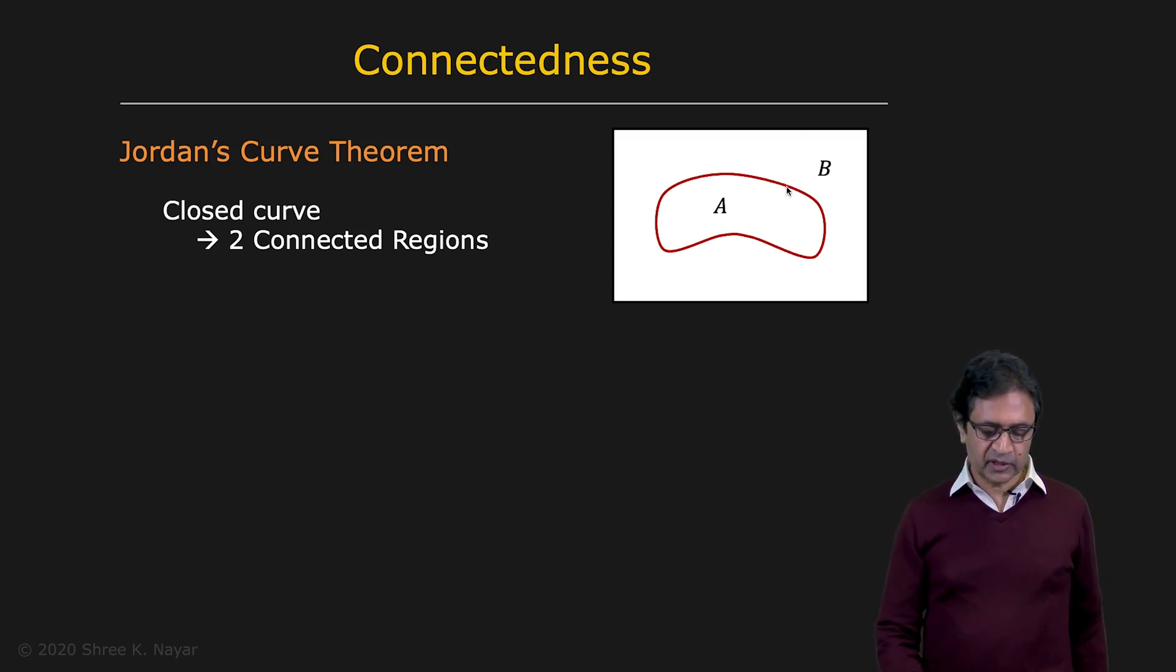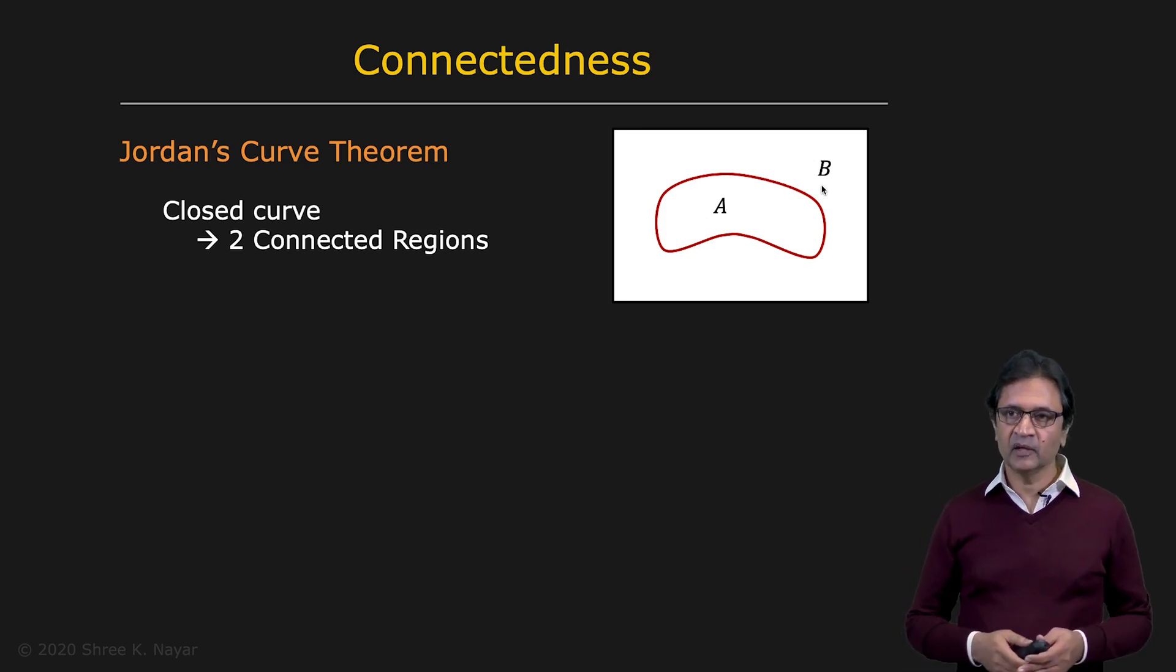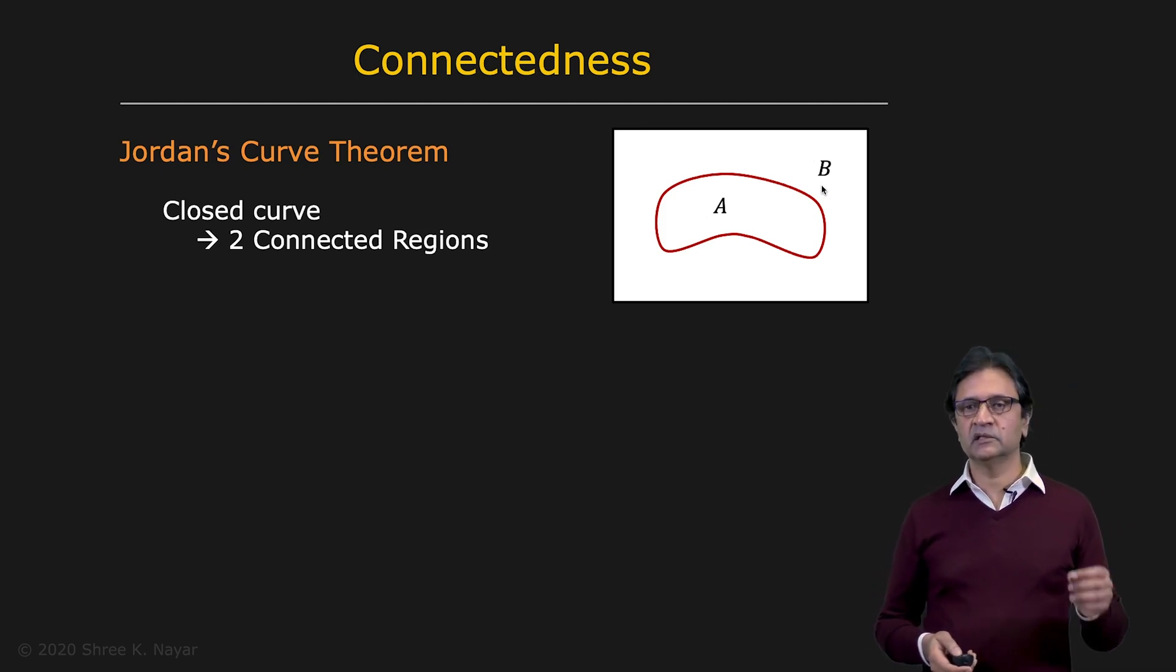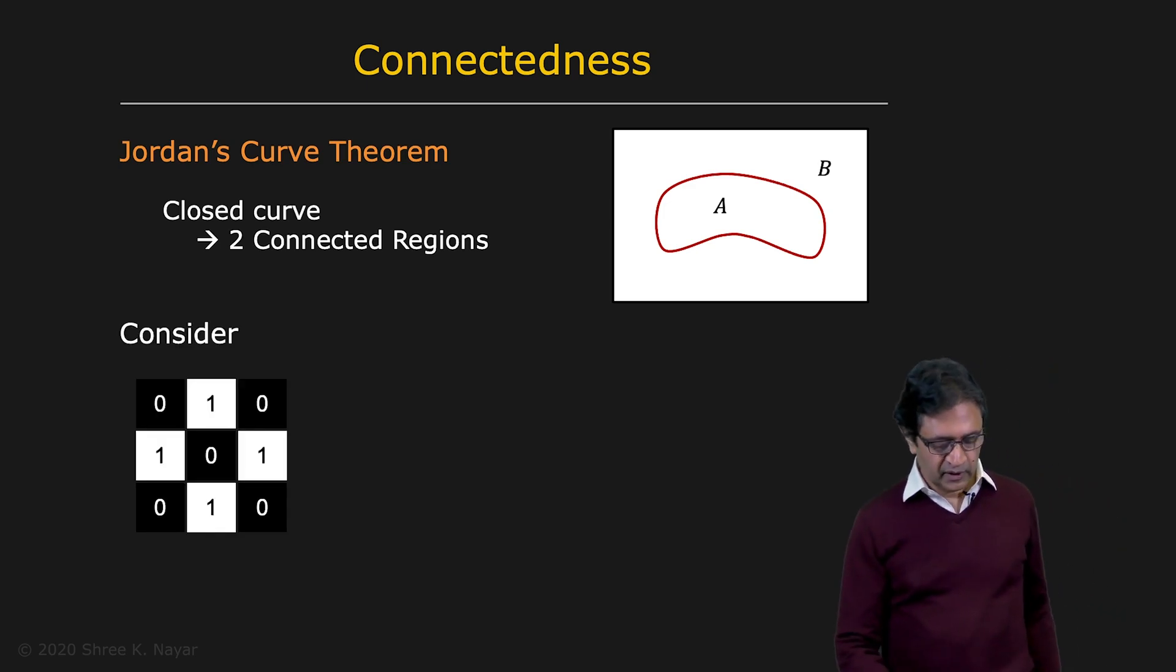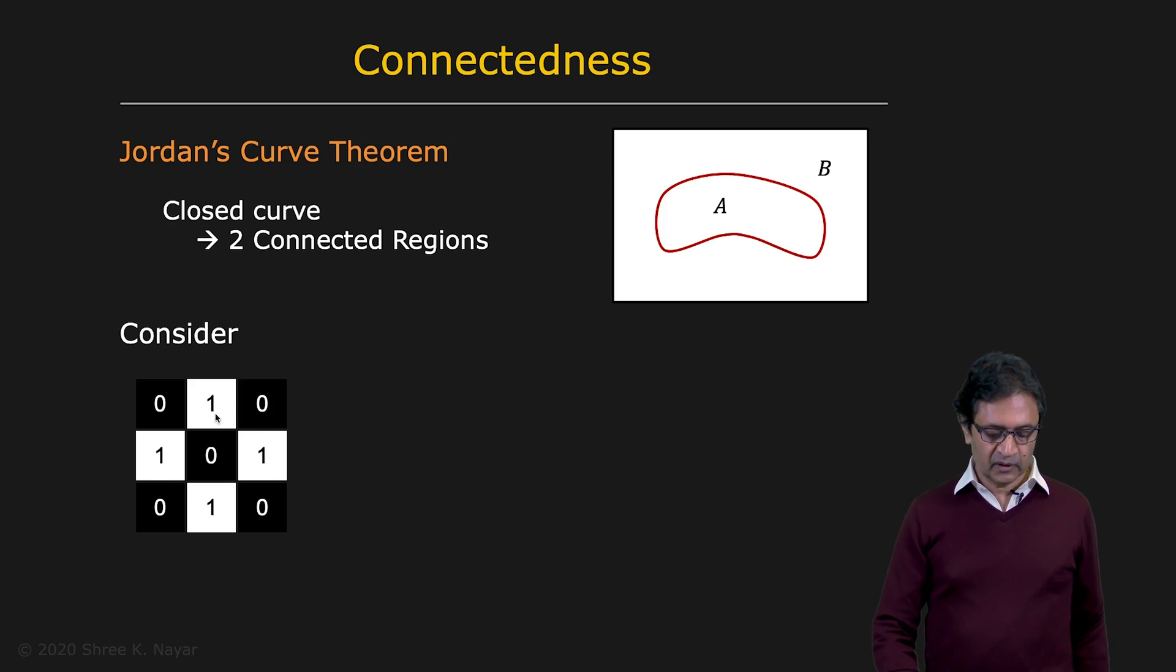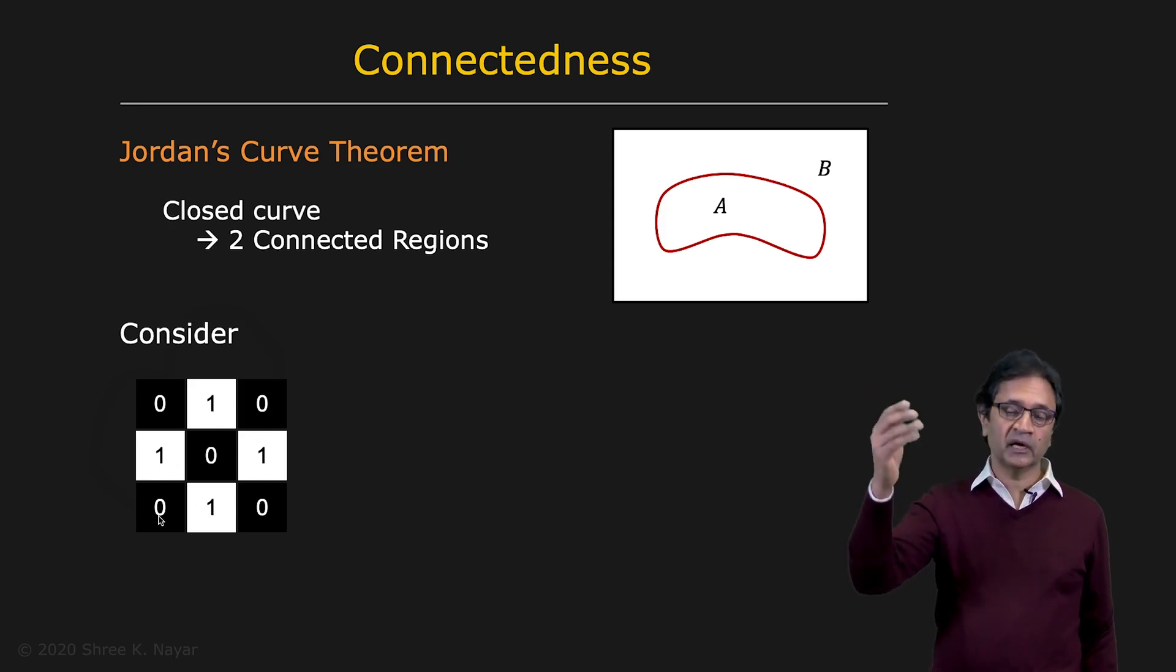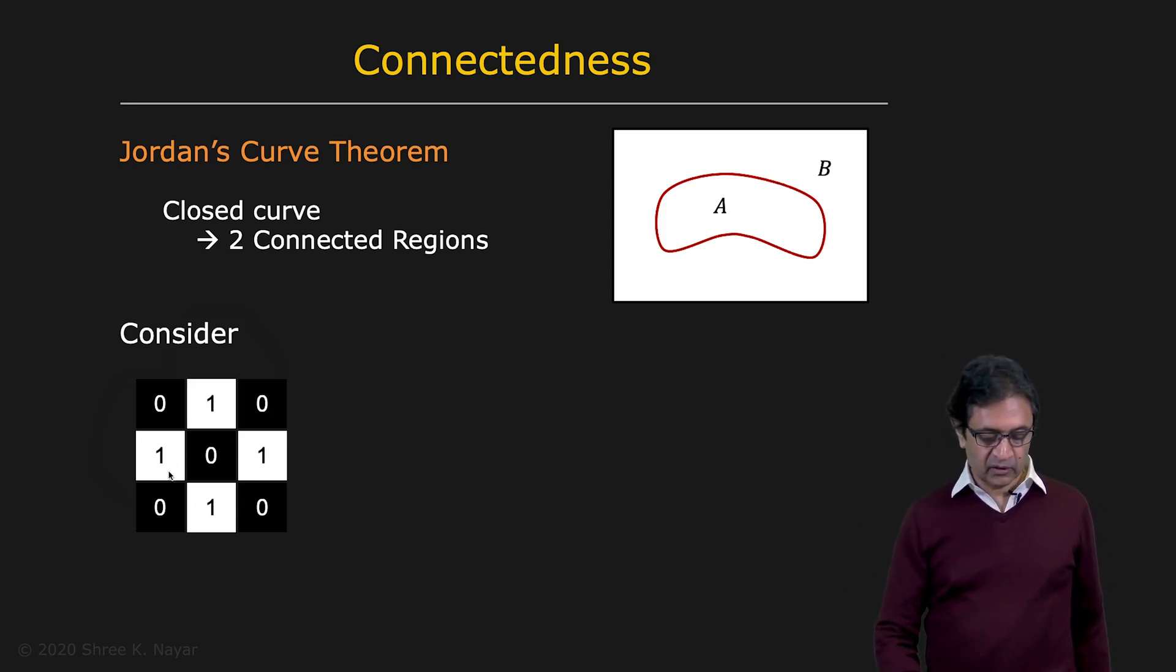It turns out that neither one is perfect. What do we mean by that? What's wrong with that? Well, for this, let's take a look at Jordan's Curve Theorem. So Jordan's Curve Theorem simply says that if you have a curve, a closed curve, that curve must divide the region up into two connected regions. This is A, fully connected A, and B. And these two are separate regions. They're not connected to each other. Well, it turns out that the four connectedness and the eight connectedness, both of them, if you use those definitions, they end up violating Jordan's Curve Theorem. So let's take a look here. Assume that this is a binary image given to you. These are ones, zeros, and we'll assume that all the zeros here are connected to each other through a larger background, which is full of zeros.